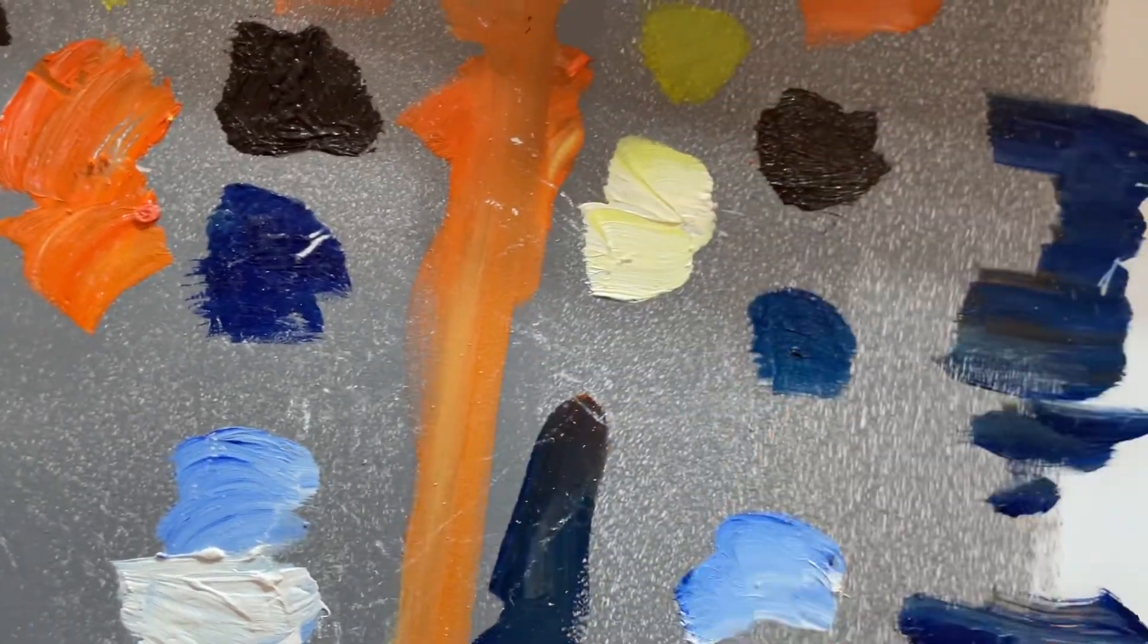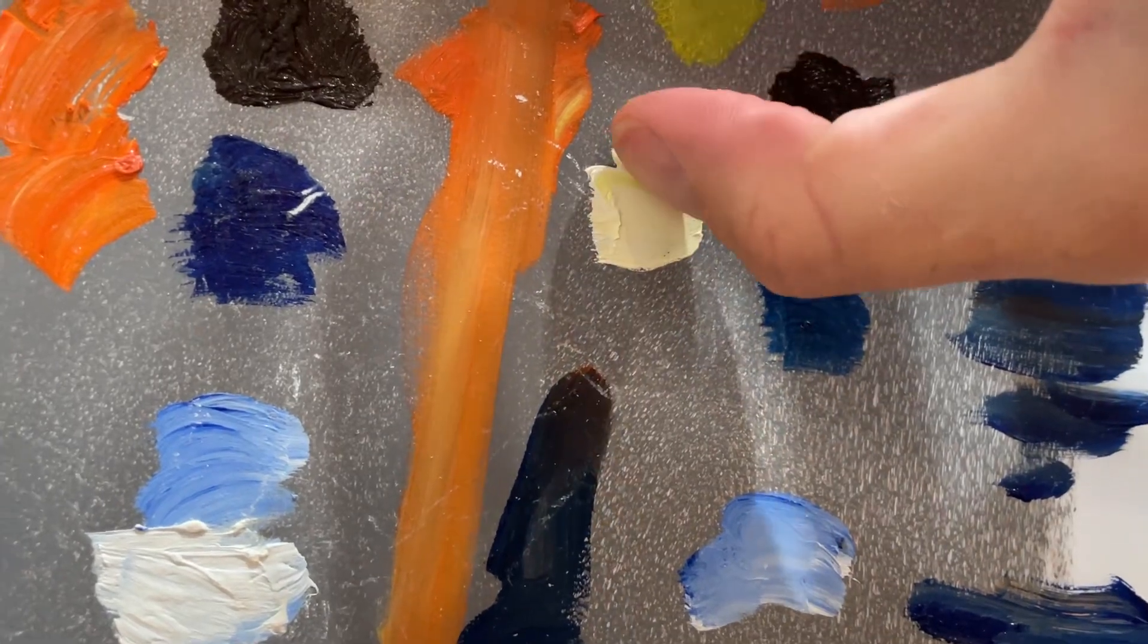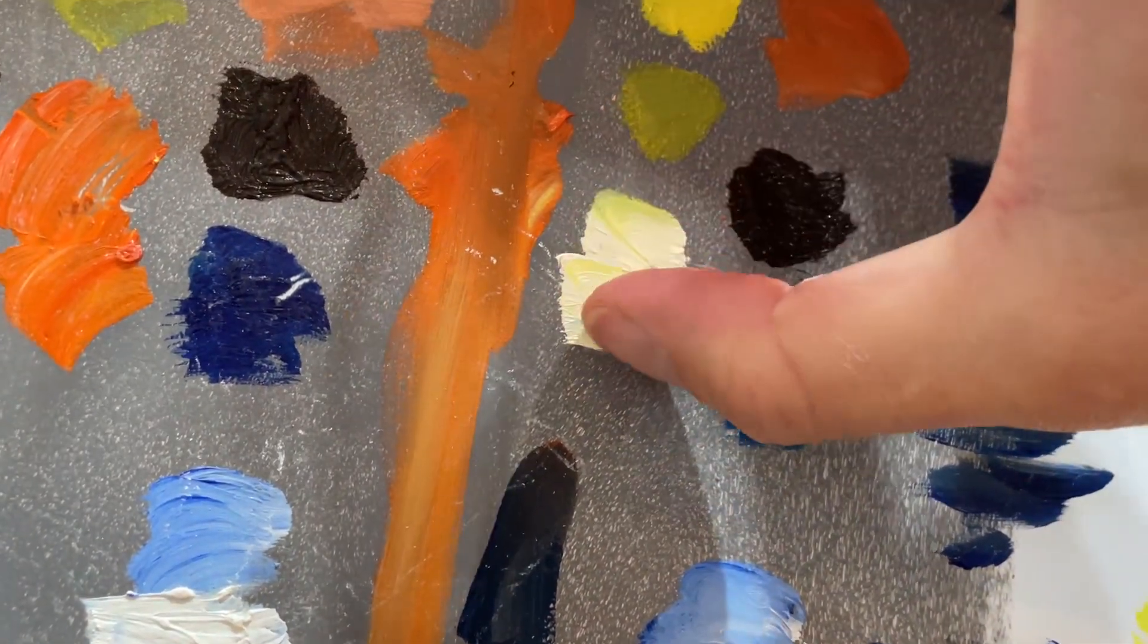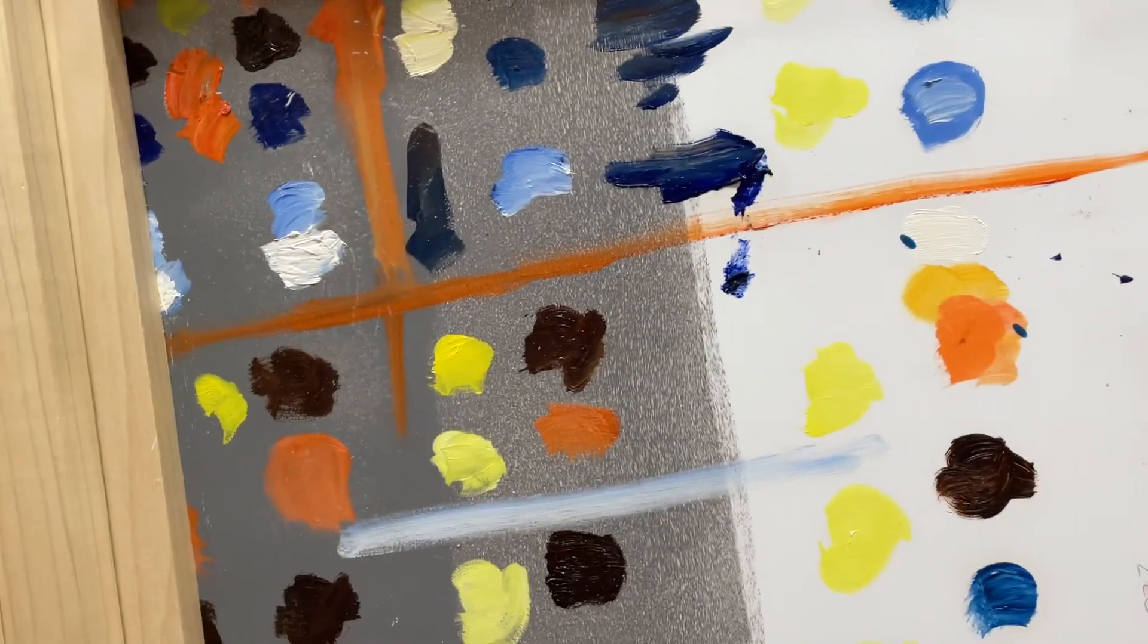But that's no different than canvas. I mean, you could scrape off paint off a canvas if you did this to it. That's not coming off. And so those are the areas that were the gessoed.